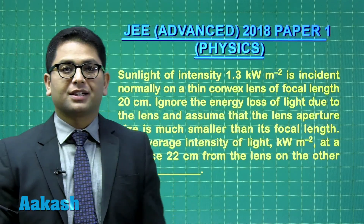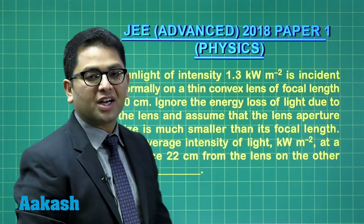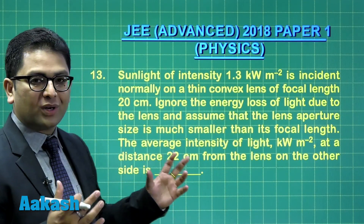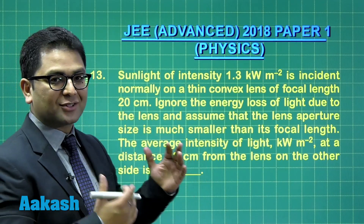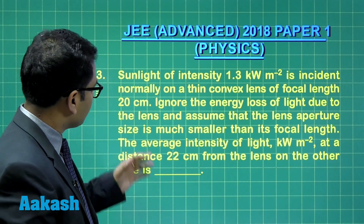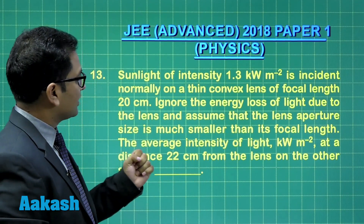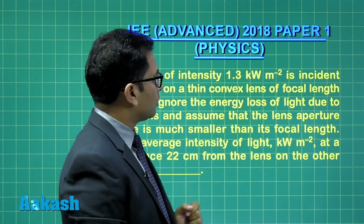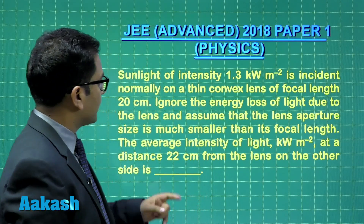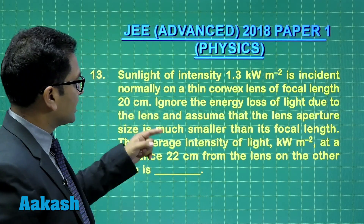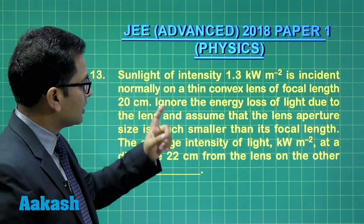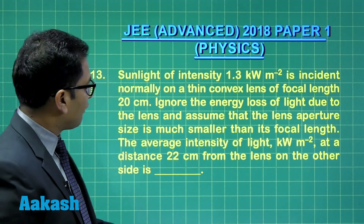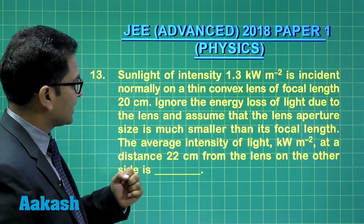Question number 13 from Ray Optics — not the regular image-object type, but something different. Sunlight of intensity 1.3 kilowatt per meter square is incident normally on a thin convex lens of focal length 20 centimeter.